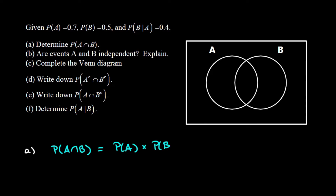Since part B is asking us to determine if these events are independent, it wouldn't be wise to assume they're independent in part A. So we're going to use a vertical bar to say we're calculating the probability of B keeping in mind that A has occurred — assuming dependent events, which is always the safest play. We look at what we were given, and we were actually given both of those things, so we're probably on the right track.